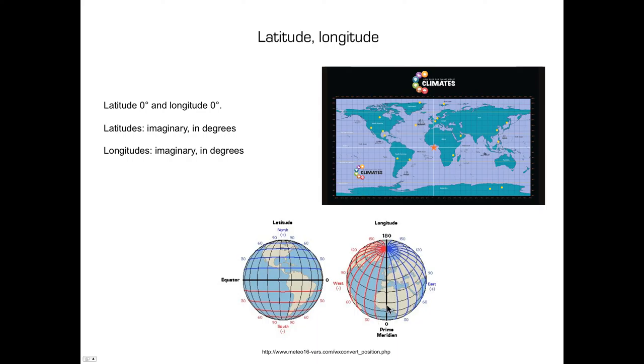Longitudes, also called meridians, are imaginary lines going from pole to pole. Longitude zero, which goes through the orange star, also goes through Greenwich, a suburb of London, in England.